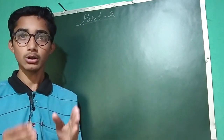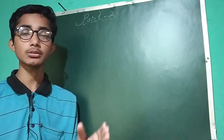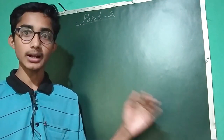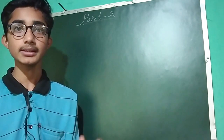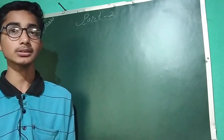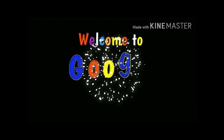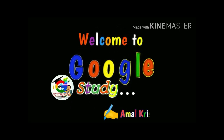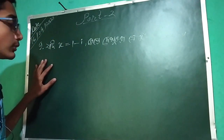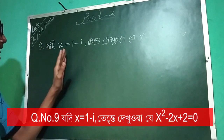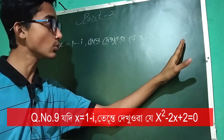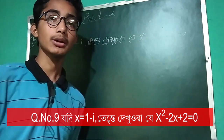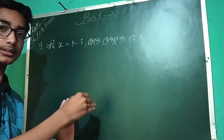Near Advanced Mathematics program 2.3, for Class 9 and 10. Today we are going to solve Question No. 9 — given x equal to 1 minus i, show that x squared minus 2x plus 2 equals 0.